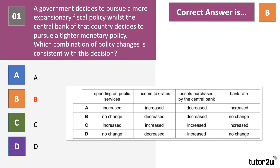Let's take fiscal policy first — that's expansionary. Public spending on public services is no change, so that's neutral, but income tax rates have been decreased. B is therefore more expansionary than A, where we've increased public spending but also increased tax rates. With B it's neutral and expansionary as opposed to expansionary and contractionary. You could also argue that D is neutral and expansionary, so on the fiscal policy side it can be B or D.